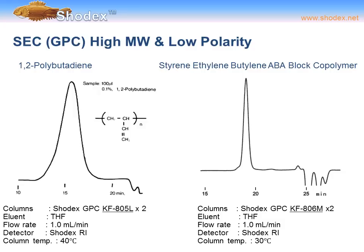Some typical SEC or GPC examples include 1,2-polybutadiene, shown on the left. The separation was accomplished with a SHODEX GPC KF805L column — two columns in series — with THF as the eluent. The KF designation indicates a polymer-based column packed in THF as both the eluent and shipping solvent. The flow rate was about 1 mL per minute, with a typical RI detector and a column oven temperature of 40°C.